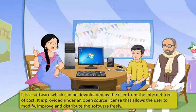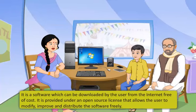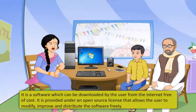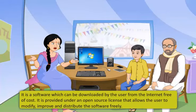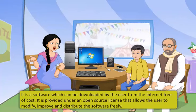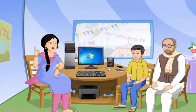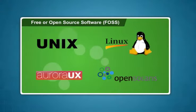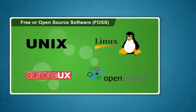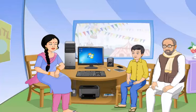Free or open source software is software which can be downloaded by the user from the internet free of cost. It is provided under an open source license that allows the user to modify, improve, and distribute the software freely. However, the changes cannot be copyrighted. The most common types of open source software are Unix, Linux, Aurora UX, and Open Solaris.